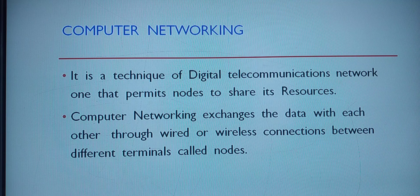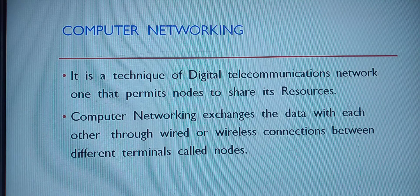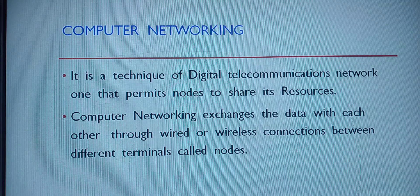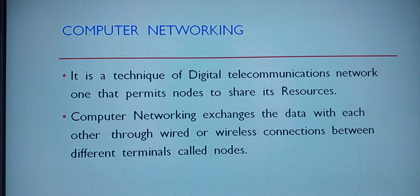What does computer networking actually do? It exchanges data with each and everyone. Over a computer network, resources are used, data is exchanged, and information is shared. For that, each and everything is connected — they can be wired or they can be wireless, between different terminals called nodes. Each computer is connected in the network by means of wired or wireless for the purpose of exchanging data.